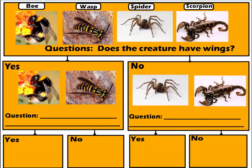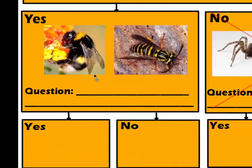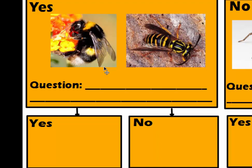Now we have to concentrate on each box separately. For the yes box, we need another question based only on the bee and wasp — ignoring the spider and scorpion for now. Looking at the bee and wasp, bees are fuzzy with short hairs, which are great for carrying pollen since they're pollinators. Wasps are predators that don't need pollen or nectar, so their bodies don't have hair. Bees' legs are wider and flat, whereas the wasp's legs are rounder and cylindrical.